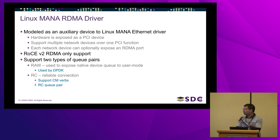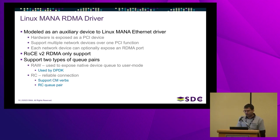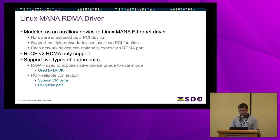The Linux MANA driver is modeled as an auxiliary device to the main ETH device. The hardware is exposed as a PCI device, supporting multiple network devices over one PCI function. Each of these is essentially a net device, which can optionally expose an RDMA port — the IB port. Currently we only support RoCEv2, and we support two types of queue pairs: raw queue pairs and RC queue pairs. Raw queue pairs expose Ethernet device queues to user mode, used by DPDK, while RC — reliable connection — supports CM verbs, used by RDMA.